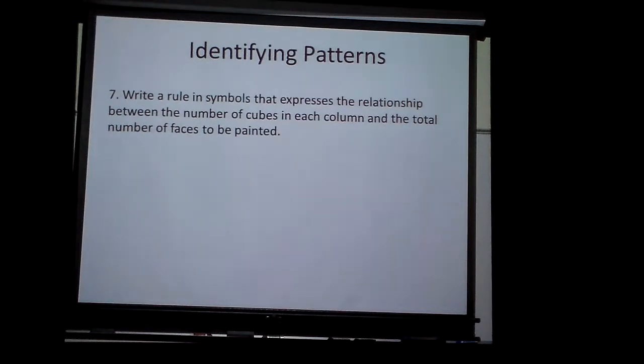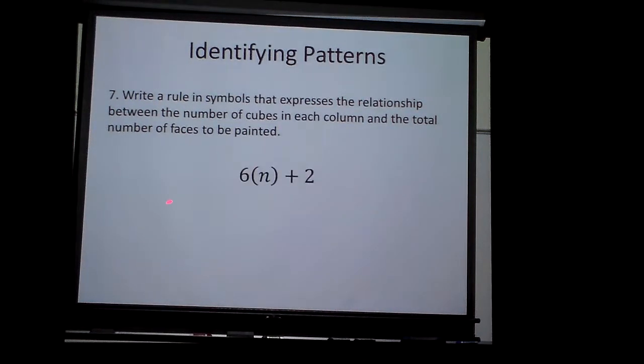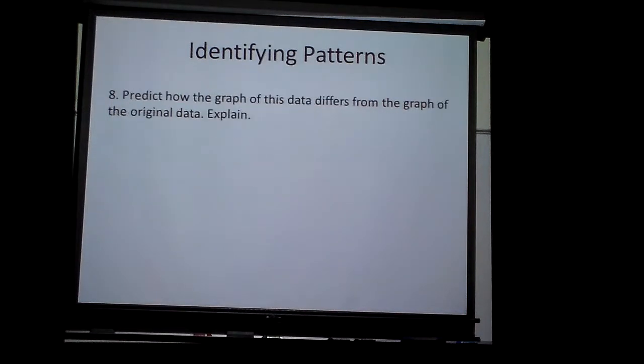So let's write a rule that expresses this relationship between the number of cubes in each column and the total number of faces to be painted. Well, I kind of did. It's called six N plus what? Two. The number of rows times six plus two will give me, in a sense, the number I need to find.